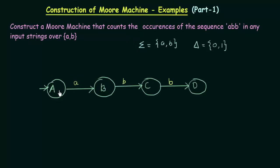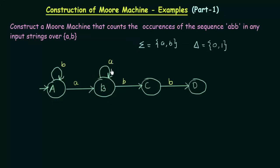This DFA is not yet complete because we have not mentioned where these states go on both inputs. In state A, I already mentioned where it goes on input 'a', but I did not mention what happens if it gets input 'b'. If A gets input 'b', I will keep it in A itself, because I want to get the sequence ABB. In state B, I already mentioned what happens on 'b', but what if it gets 'a'? If I come like AB and get a small 'a' again, I will keep it in B itself, because I want to get 'a' then 'b', 'b'.